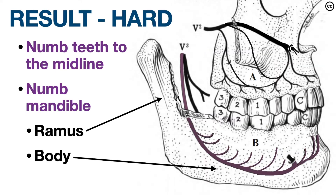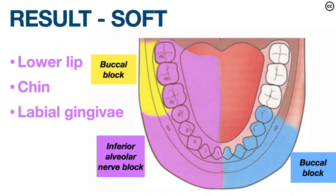A successful ID block will numb the teeth to the midline and numb the mandible from the ramus to the inferior border of the body. The soft tissue effects of the ID block include the lower lip, the chin, and the labial gingiva.